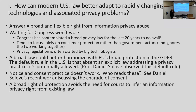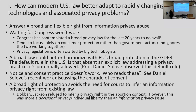Warren and Brandeis in 1890 had to imply a right from existing law, and a lot of people signed on. Dobbs v. Jackson refused to infer a privacy right in the abortion context. This decision was more of a decisional privacy or individual liberty issue than an information privacy issue. But we're going to explore the differences between decisional privacy and information privacy.